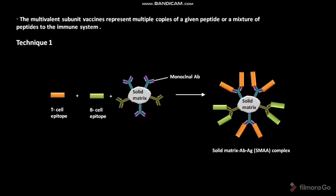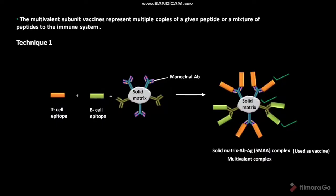The B-cell epitope and T-cell epitope are peptide in nature. The SMAA complex is then used as a vaccine. The SMAA complex is a multivalent complex because it contains different monoclonal antibodies and both B-cell epitopes and T-cell epitopes. These monoclonal antibodies can bind to a mixture of peptides or proteins. The SMAA complex induces humoral and cell-mediated responses, and is particle in nature.